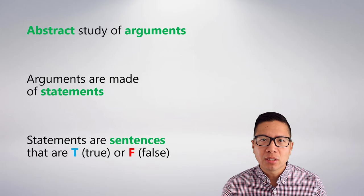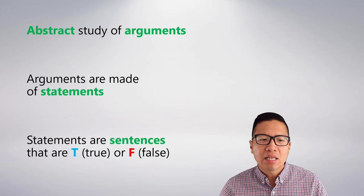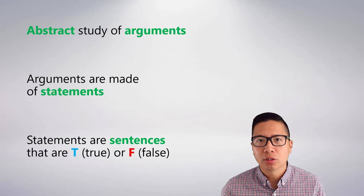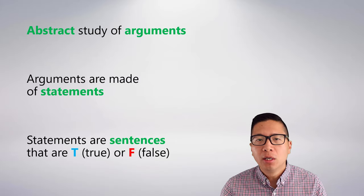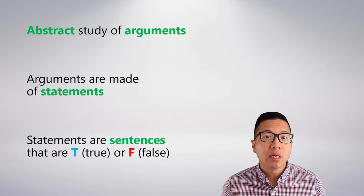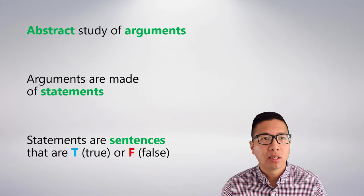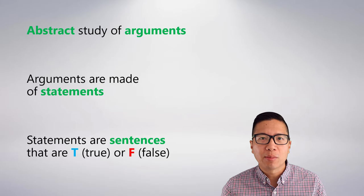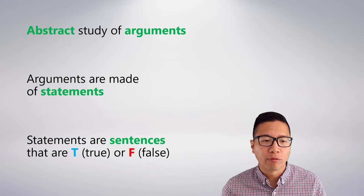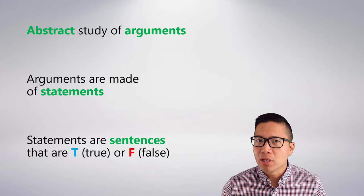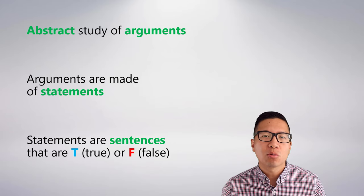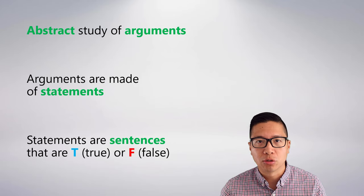Statements are a very special type of sentence — a particular kind of sentence — and these are sentences that have a truth value. So they are either true or false. Not all sentences have truth value. It's really easy to come up with a statement: it's anything that's true or false, like 'it's raining outside' or 'I like cheesecake.' These are examples of statements. Now, can you think of something that's not a statement — a sentence that is a non-statement? That would be something that has no truth value at all.